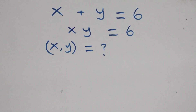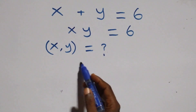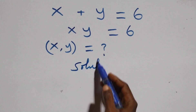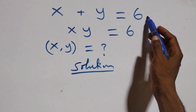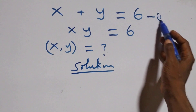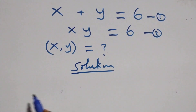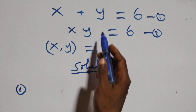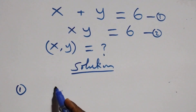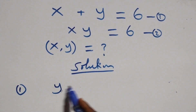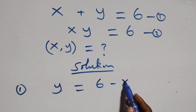Hello, you are welcome. We will solve this algebraic equation. I label this as equation one and this as equation two. From equation one, we make y the subject by taking x to the other side, and we have y equals six minus x.